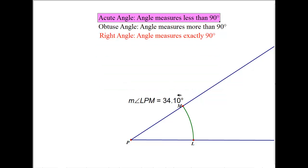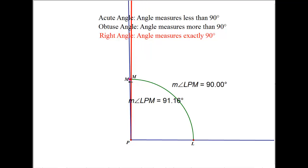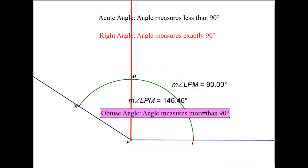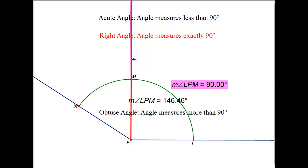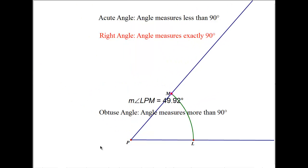Acute angles are angles that measure less than 90 degrees. If the angle is exactly 90 degrees, it becomes a right angle. If the angle is more than 90 degrees, it becomes an obtuse angle. To summarize: right angle means exactly 90, obtuse angle is more than 90, and acute angle is less than 90.